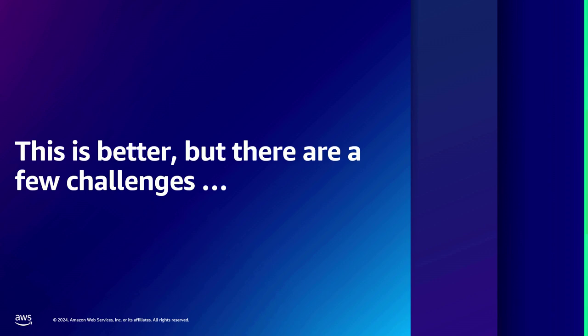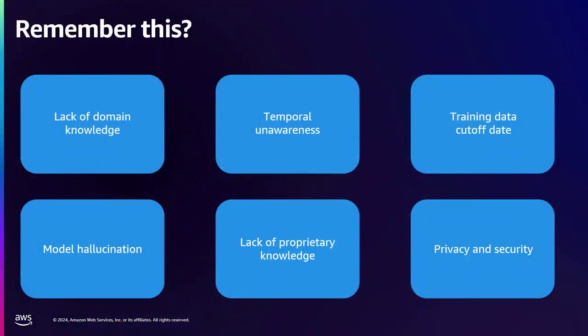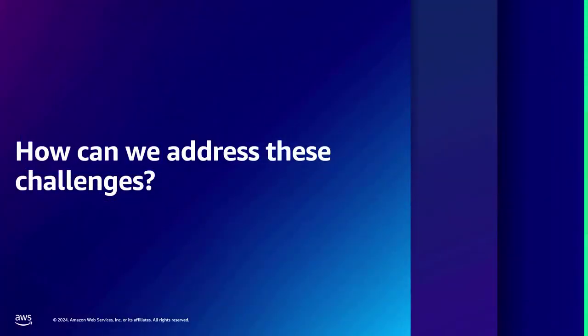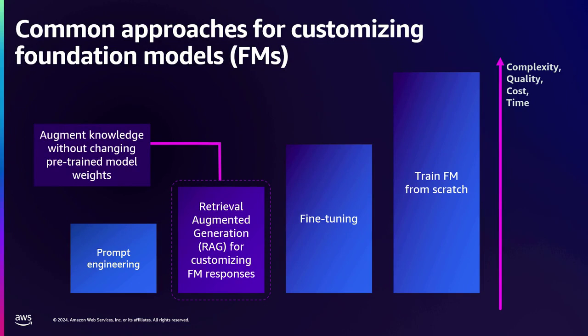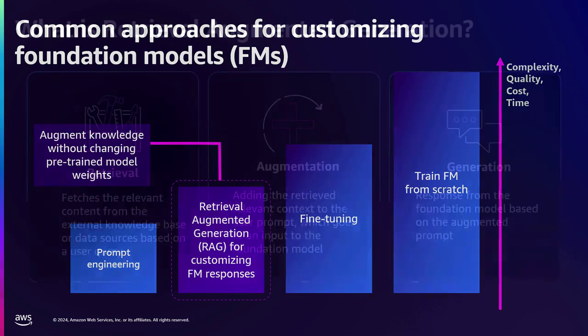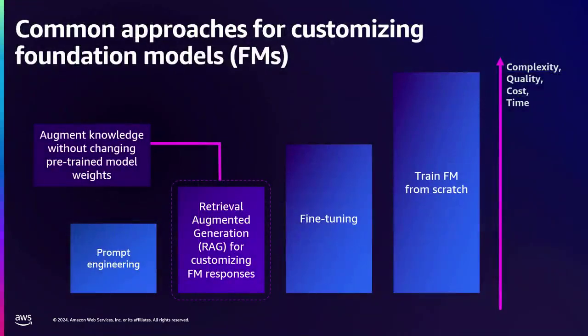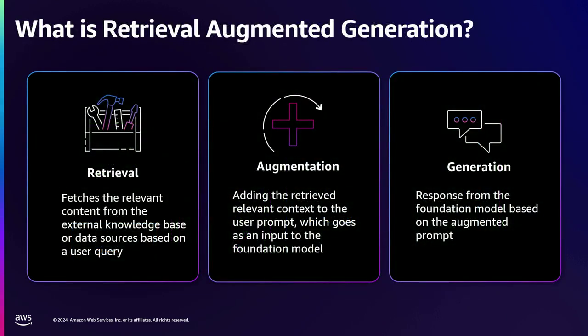Now the traffic is secure. But how do we solve the application-level challenges we identified? The answer is: it depends. Everybody knows what prompt engineering is — the more information you put into your prompt, the more the LLM can use to give you a sensible response. But we could also use retrieval augmented generation or RAG, or we could fine-tune, or train the foundation model from scratch. The further right we go, the more complex, time-consuming, and costly it gets. The most common method we see right now is RAG.